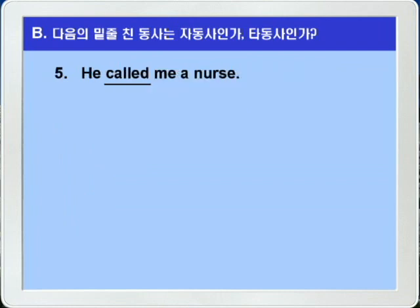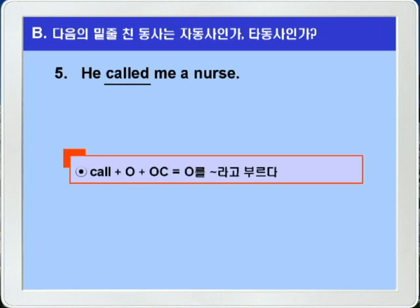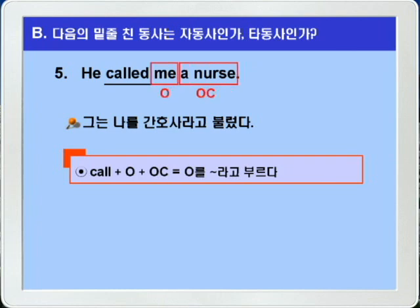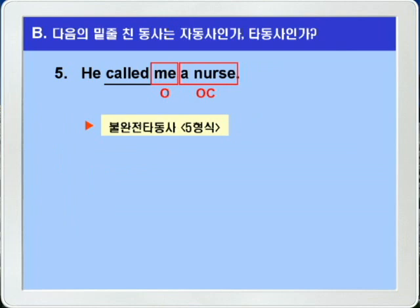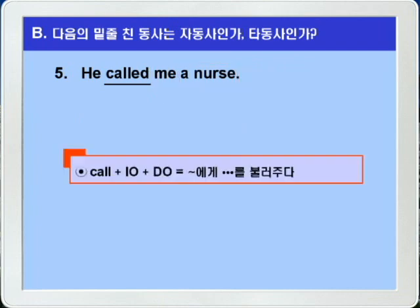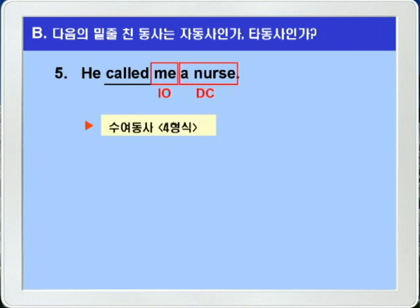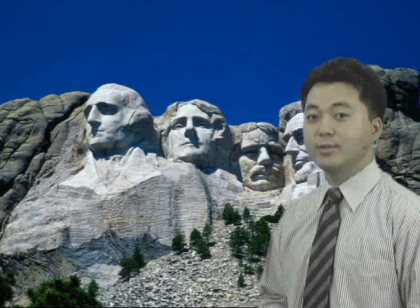마지막 5번, 이 문장은 두 가지 해석이 가능합니다. call을 call 플러스 목적어 플러스 목적보어 형식으로 '목적어를 뭐뭐라고 부르다'로 해석하면 그는 나를 간호사라고 불렀다가 되어 불완전 타동사로 5형식이 됩니다. 또는 call을 간접 목적어 플러스 직접 목적어 형식으로 '나에게 간호사를 불러주었다'로 해석하면 수여 동사로 4형식이 되겠습니다.